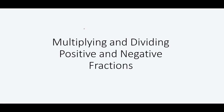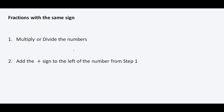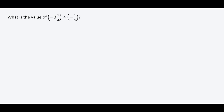Let us learn how to multiply and divide positive and negative fractions. We will look at fractions with the same signs and fractions with different signs. When you have fractions with the same signs, you multiply or divide the fractions and then you add a positive sign to the left of the result. So let's look at some examples here.